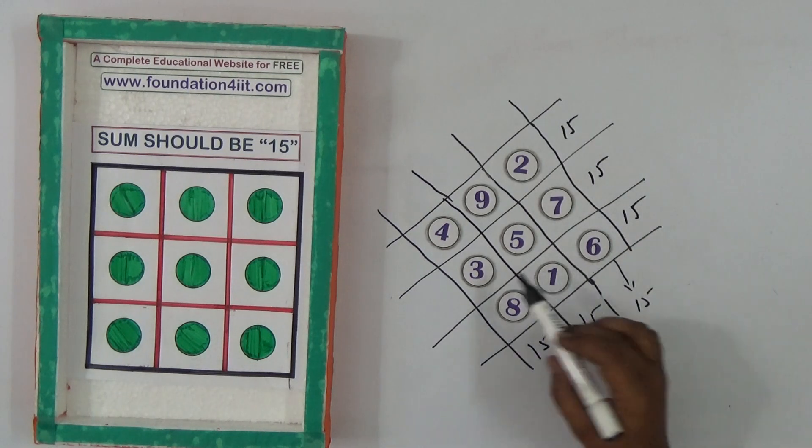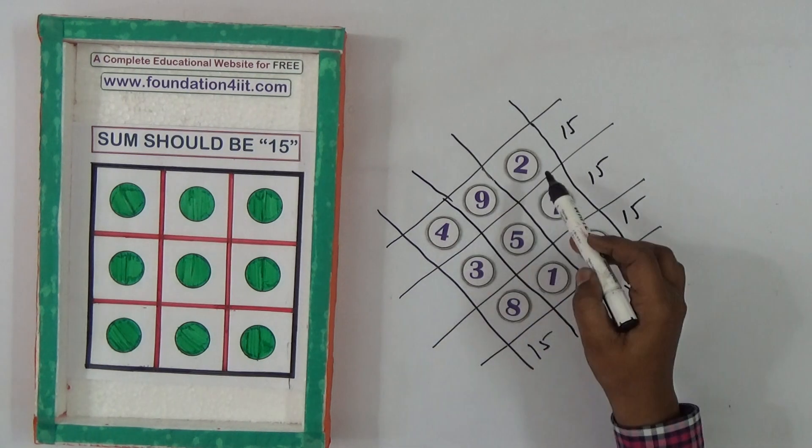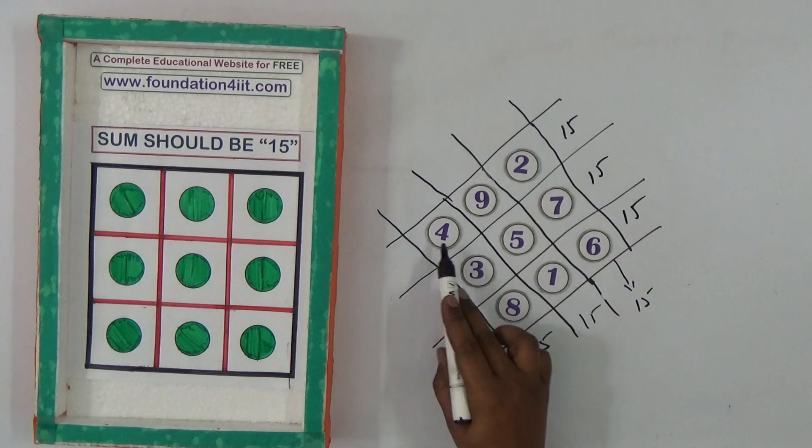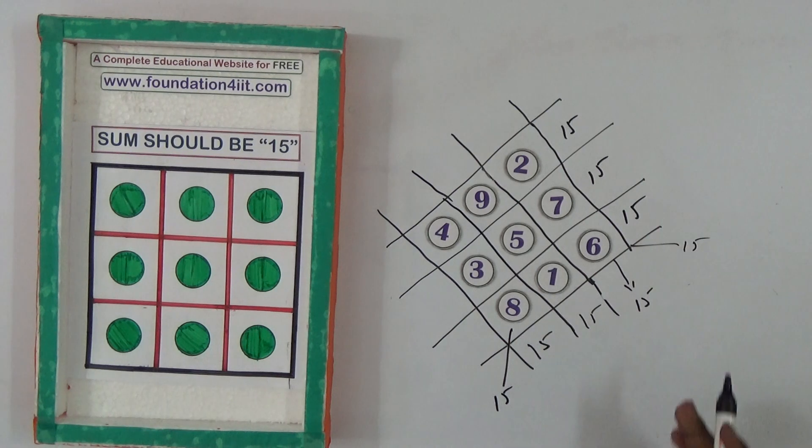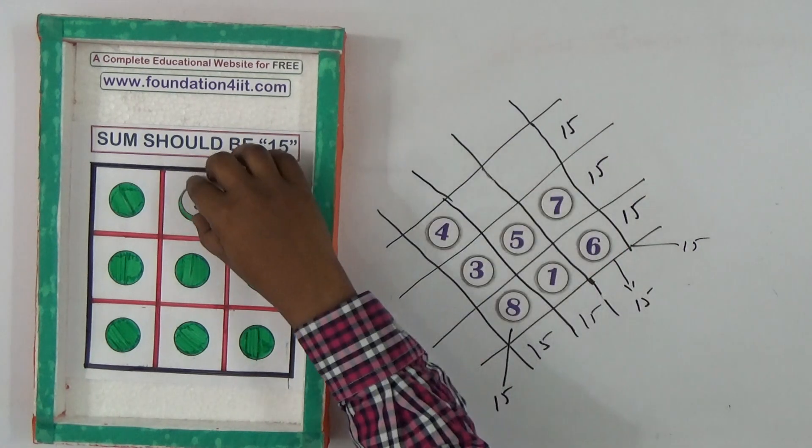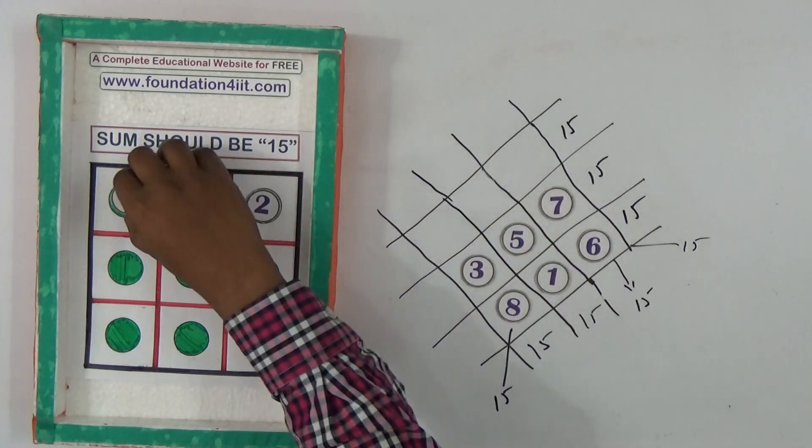Because 8, 1, 6, 3, 5, 7, 4, 9, 2. And diagonal, 2 plus 5 plus 8 is 15. This diagonal, 4, 5, 6. This set, you can place here, 2, 9, 4.